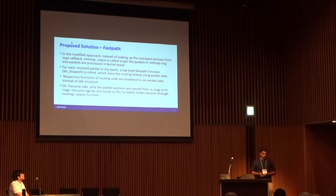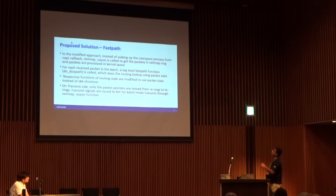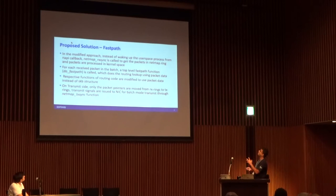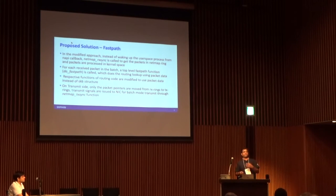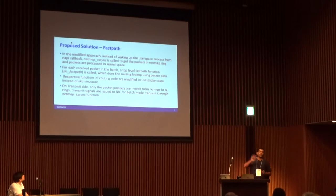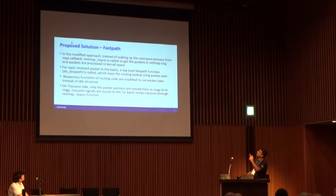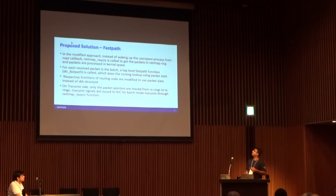In our modified approach, instead of waking up the user space process, we call NetMap RX sync to get packets into the NetMap ring and process them in the kernel. At that point we fetch all packets from the NetMap ring, process them in kernel, and run a for-loop on the batch to process all packets.